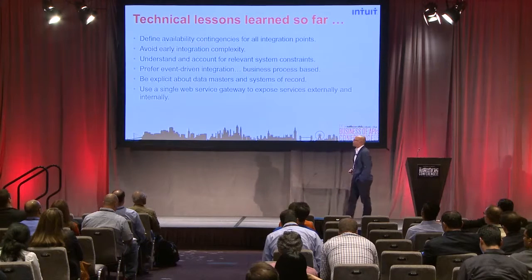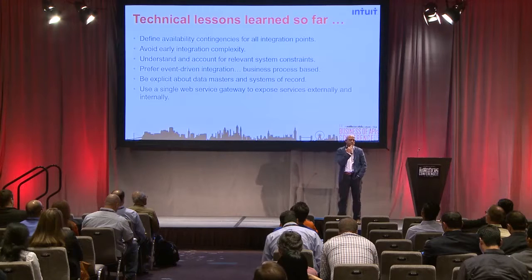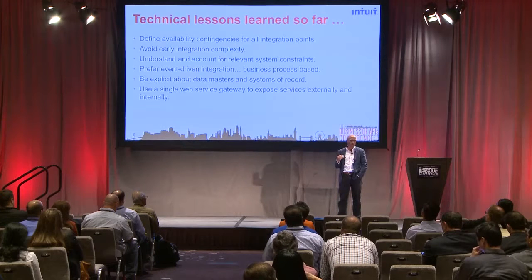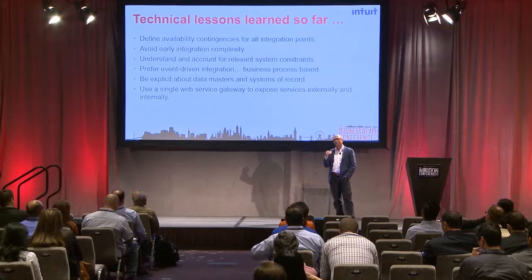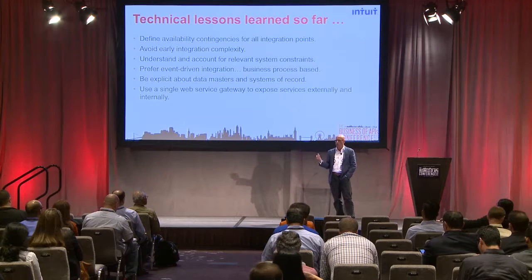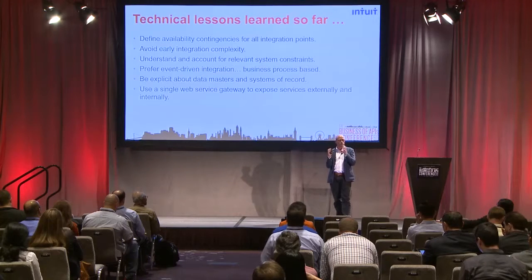The technical lessons so far are also important. Because we really want these to be self-service and these are enterprise APIs, it's really important that we have the right contingencies built in at every integration point. What happens if it fails? You always want to return something back so your application and consumer can keep moving on — but what does that mean from an integrity standpoint if you're processing an order? Getting those contingencies right is a really important thing to invest time in. And avoiding early integration complexity — you really want to stick at the higher, simpler level first.